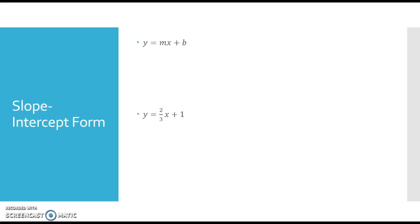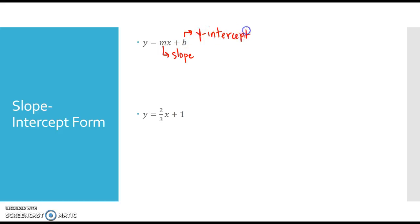Now let's look at slope-intercept form. Slope-intercept form is y equals mx plus b. We call it slope-intercept form because it gives me the slope and the intercept. This m is my slope — whatever is in front of the x is the slope. And whatever constant you have, the one not with the variable, is going to be your y-intercept, which we call b. For example, in y equals two-thirds x plus 1, my slope is two-thirds and my y-intercept is at (0, 1). Remember, your y-intercept is where it crosses the y-axis.